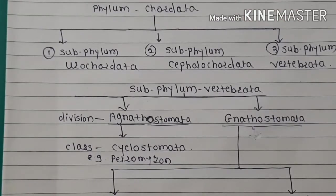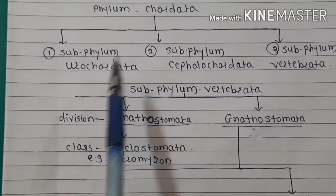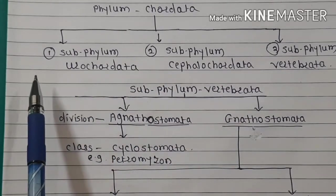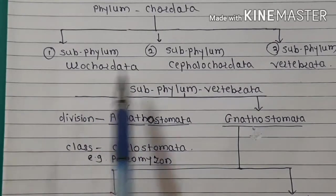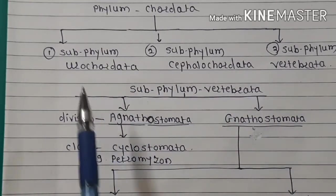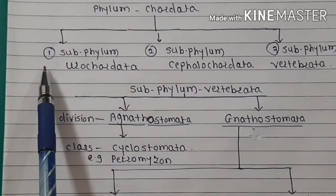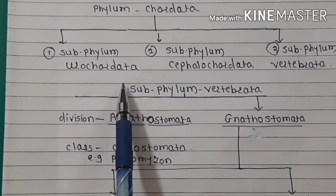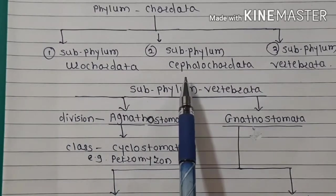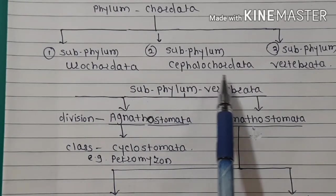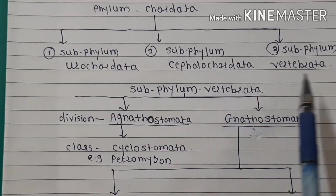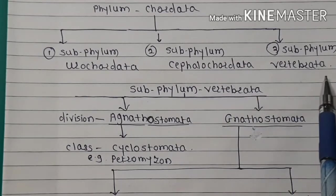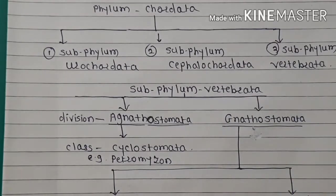Phylum Chordata is divided into three subphyla. The first subphylum is Urochordata. Second, Cephalochordata. Third, Vertebrata.